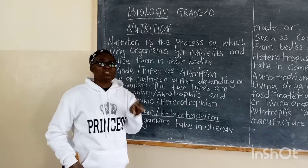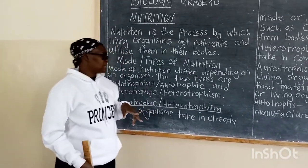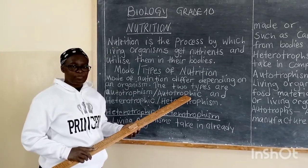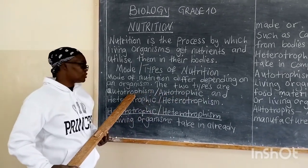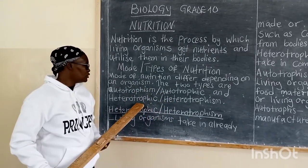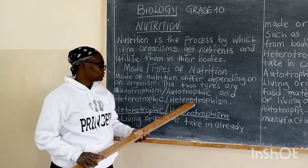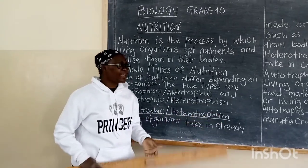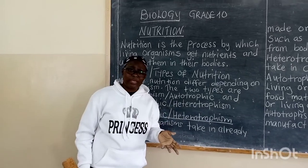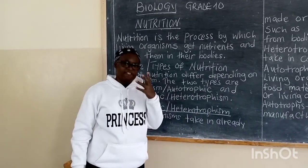There are two modes of nutrition. The first is autotrophic, which can also be referred to as autotrophism. The second one is heterotrophic, or heterotrophism. We need to look at what these terms mean and how these living organisms feed.